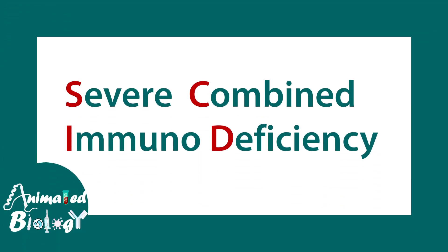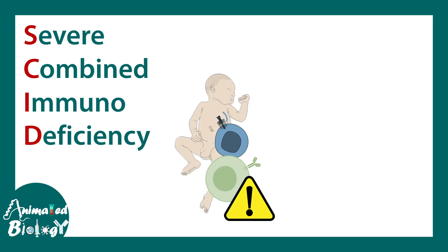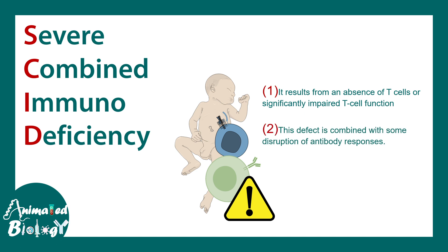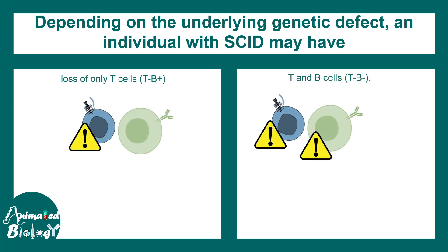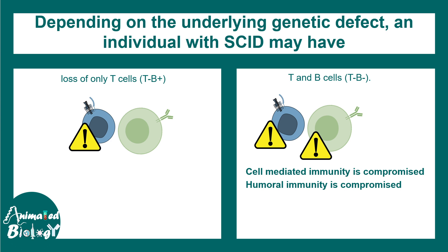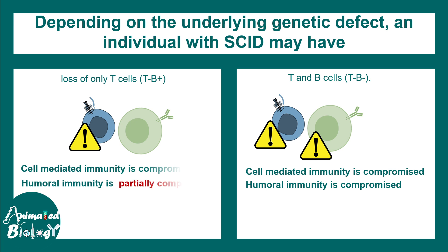Starting with severe combined immunodeficiency, as the name suggests, there is a severe compromise of the immune system. Majorly, the T-cells are significantly compromised and their function is altered. Also, there could be problems in B-cells and antibody-mediated responses. There are two kinds: first, there could be complete loss of T-cells but B-cells remain intact. In the second type, there could be problems in both cell types, so both cell-mediated and humoral immunity are compromised. In the earlier case, only cell-mediated immunity is compromised and humoral immunity is partially compromised. Several aspects of T-cell and B-cell maturation are abrogated in these conditions due to genetic defects.